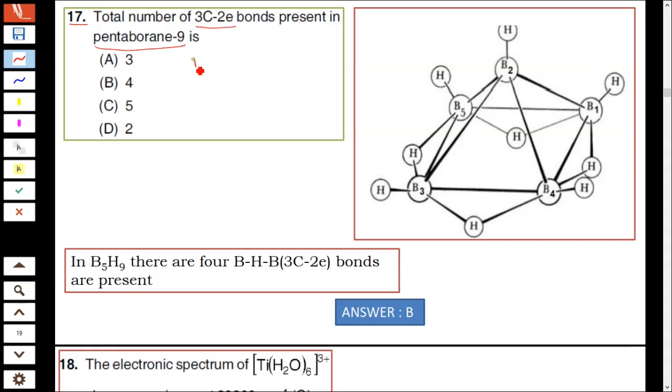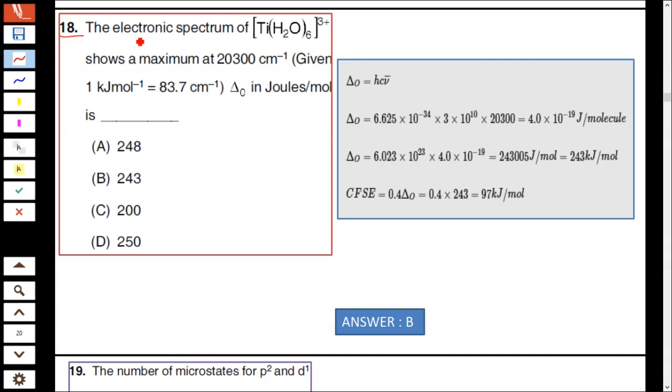First you see the structure of pentaborane-9. They are asking how many BHB bonds are present in pentaborane-9. In this structure: 1, 2, 3, and 4 BHB bonds. It contains 4 BHB bonds. Hence answer B is correct.